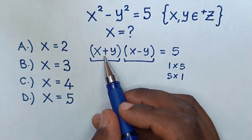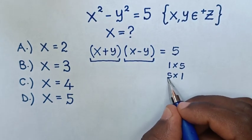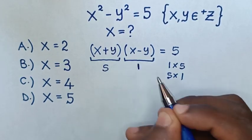But because here there is addition, this is greater than this. Then we select 5 is greater than 1, so we'll use 5 and 1.